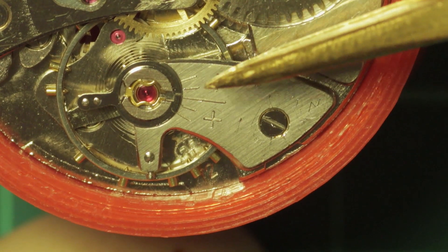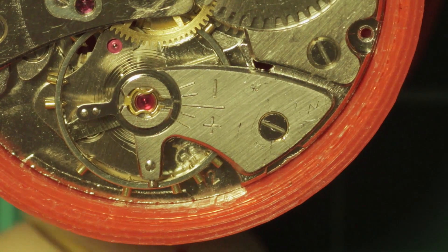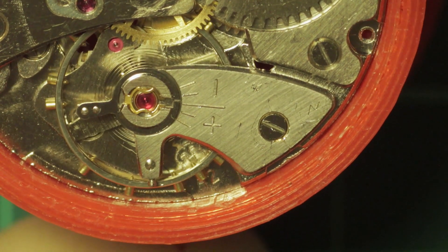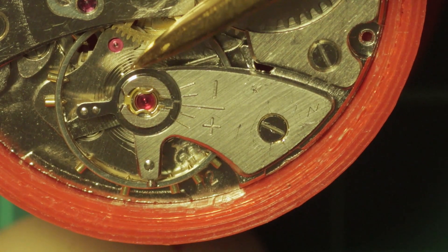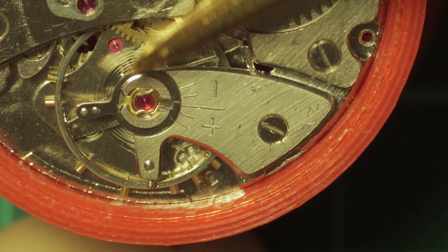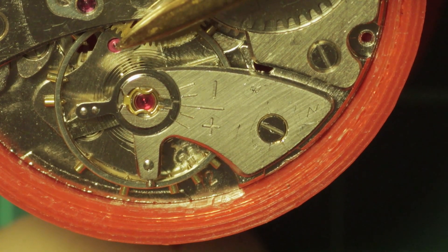A handy little tip for those that don't know: if you've got a balance wheel with two arms like this, the impulse jewel will always be directly in between them. So that will be where your pallet fork is.